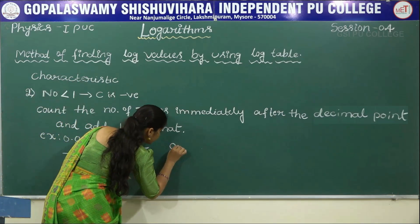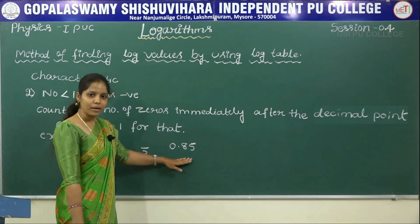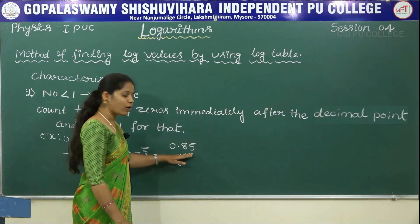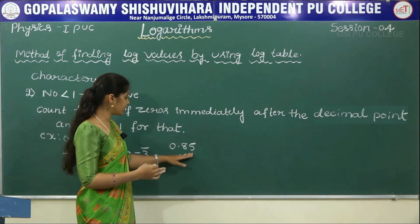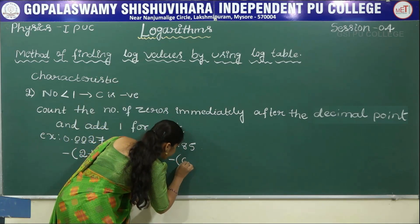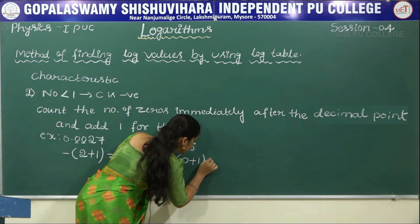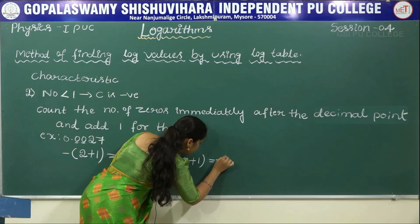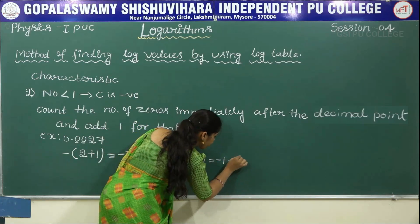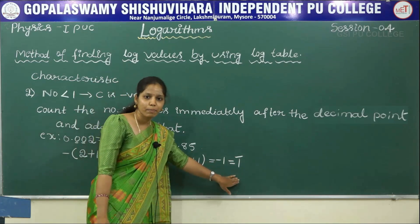Consider one more example: 0.85. This number is less than one, so its characteristic is negative. We count the zeros immediately after the decimal point — no zeros, so 0. We add 1: 0 plus 1 gives 1, that is minus 1, written as bar 1. So the characteristic of 0.85 is bar 1.